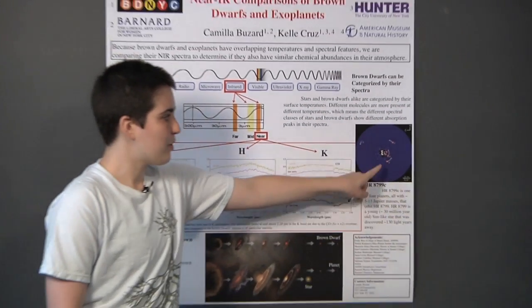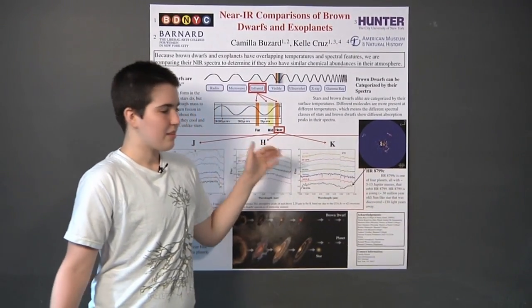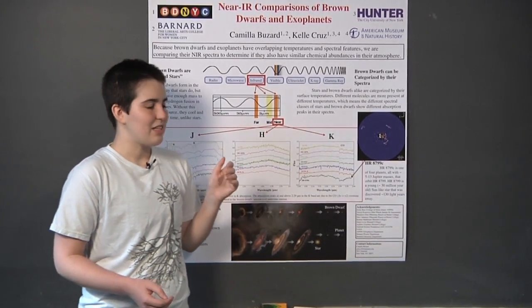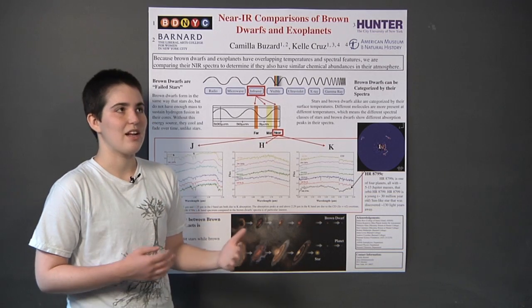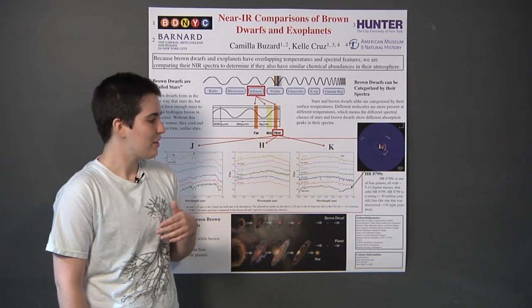This one planet, the second from the outside, is called HR 8799C. It's the one that I used, that I compared the spectra of to other brown dwarfs.